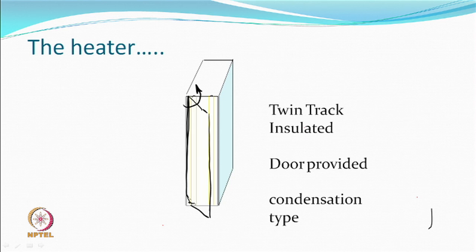It does not matter whether you take the yarn from bottom to top or top to bottom — the horizontal or vertical position of the heater is based on convenience and space. Contact heating is probably more efficient. The heater is a twin-track kind of thing, so you handle individual yarns, with maybe two yarns going together in one small block. It has to be properly insulated with a door, and heating is generally done by condensation — a fluid inside evaporates just behind the heater plate for the most uniform temperature.